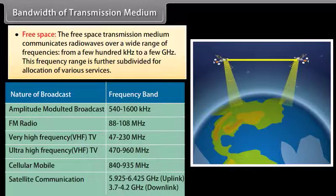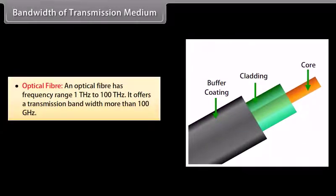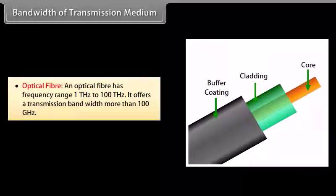This frequency range is further subdivided for allocation of various services. Optical fiber: an optical fiber has a frequency range of 1 THz to 100 THz, and it offers a transmission bandwidth of more than 100 GHz.